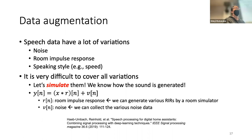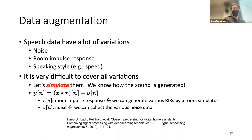Particularly important for real systems are robustness to noise and room impulse response. There are probably an infinite number of noise types in the world, and room impulse response changes with room size and temperature. It's very difficult to cover all such variations by just collecting data. However, we are lucky — speech is a physical signal, so we know the propagation equation and can model room impulse response and noise with convolution and addition.